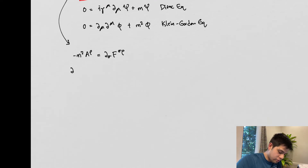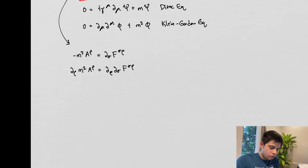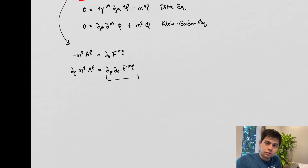Well, if we take the divergence of both sides, just with the dummy index ρ, we get ∂_ρ A_ρ on the left. We have to do the same thing to the right-hand side. And this right-hand side actually turns out to be zero. Let's see why this is zero.